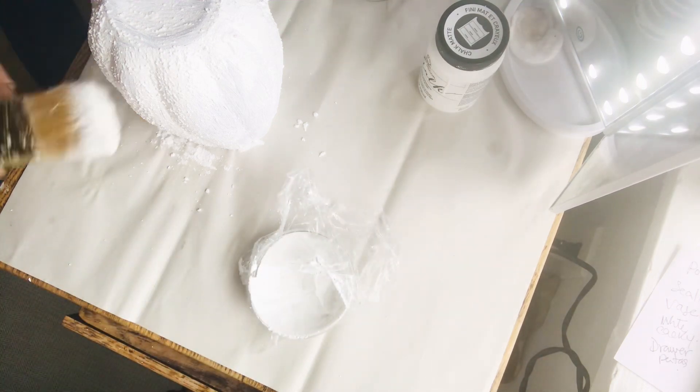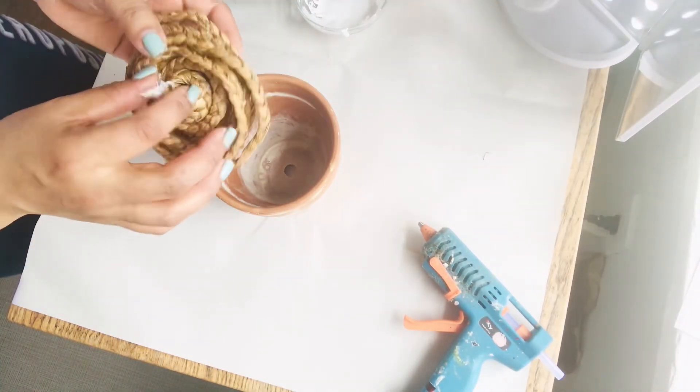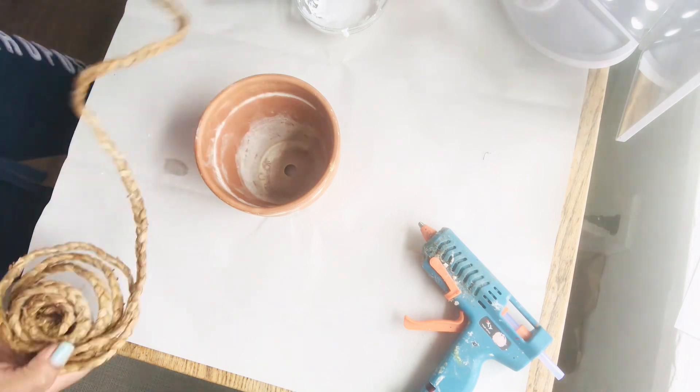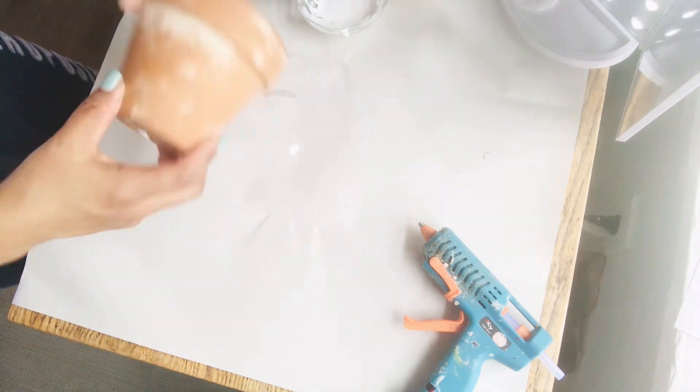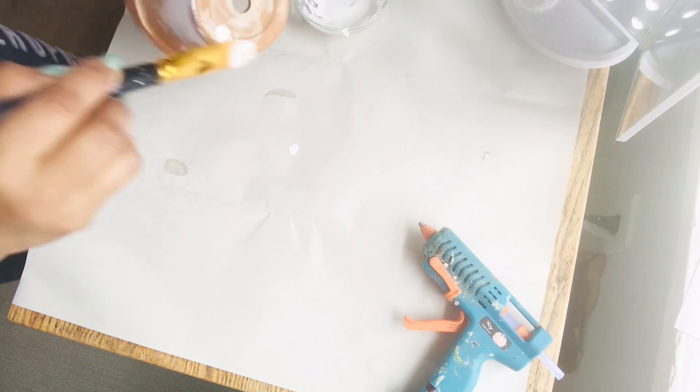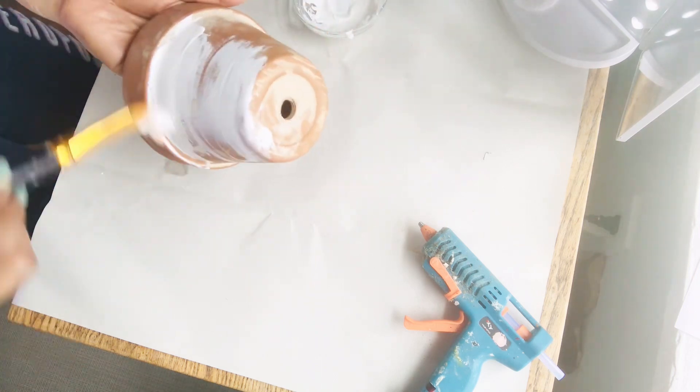Next I'm going to reuse this terracotta pot and also this stem coming from a pumpkin from the Dollar Tree. I'm going to use it into the pot, but first I'm going to give it a coat of white chalk paint.